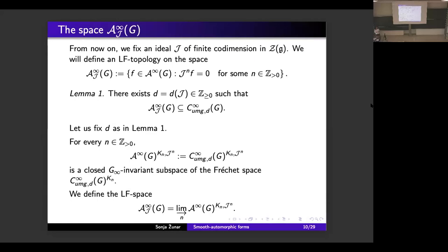Does it depend on the choice of D? Very good question — I was planning to say that but forgot, so thank you. Yes, it is very easy to see that in fact the Fréchet topology defined on the spaces A∞_{J,K_n^N} does not depend on our choice of the exponent D. This follows easily from the open mapping theorem, which holds for Fréchet spaces.